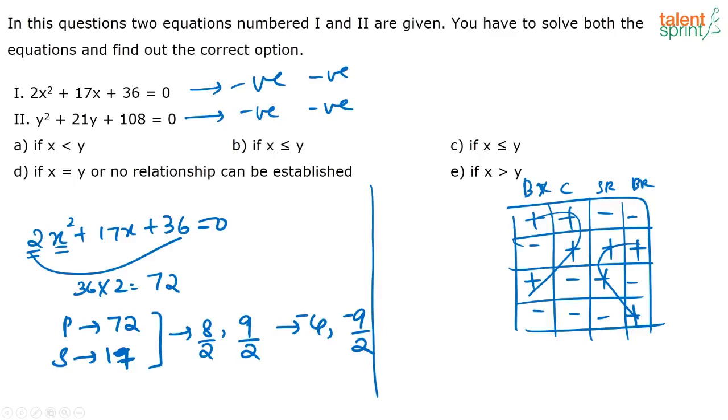Next, look at the next equation: y² + 21y + 108 = 0. Here the coefficient of y² is 1, so you need two numbers whose product is 108 and their sum is 21. 12 × 9 = 108, and 12 + 9 = 21. So the two numbers are 12 and 9.